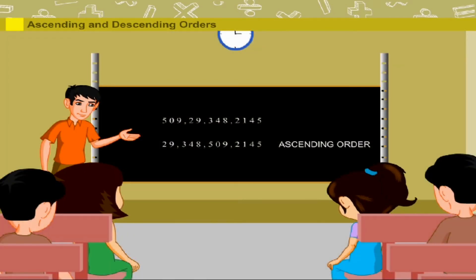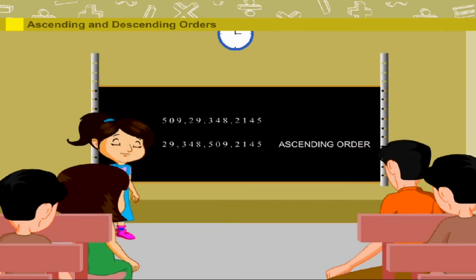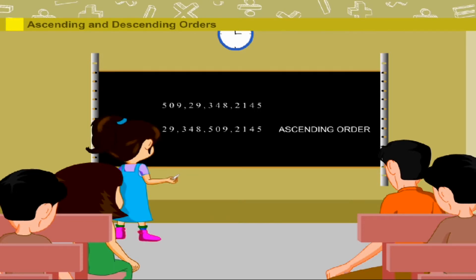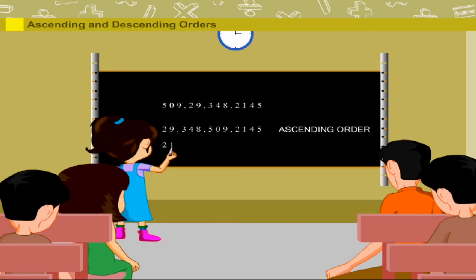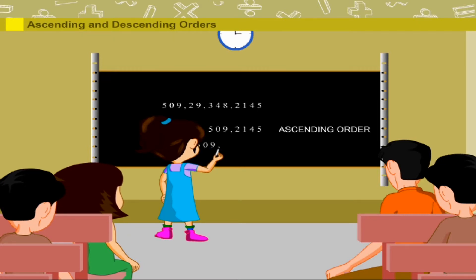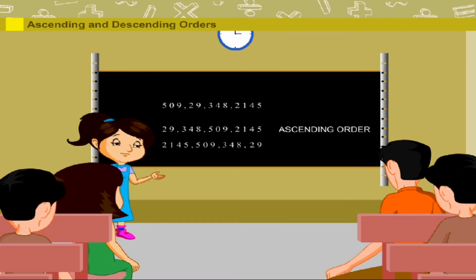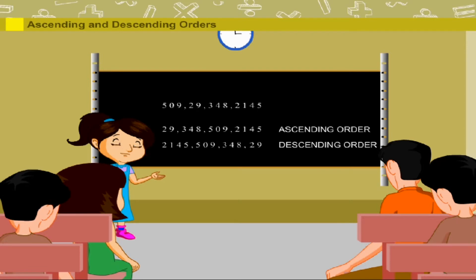Now, Raman asks her to arrange the numbers in decreasing order. This time, Shinu arranges the numbers from the greatest to the smallest. First, she writes two thousand one hundred and forty-five, then five hundred and nine, followed by three hundred and forty-eight, and finally twenty-nine. She explains that such an arrangement of numbers is called descending order of the numbers.